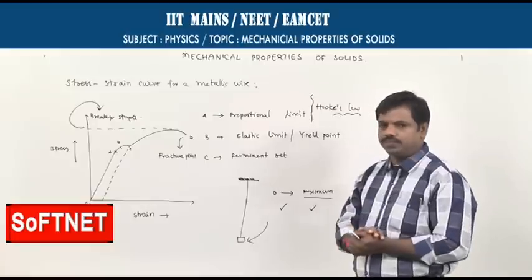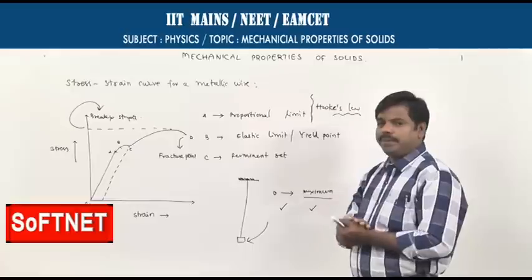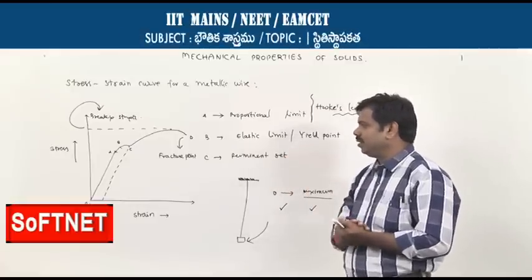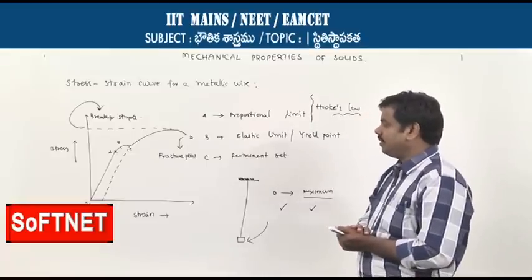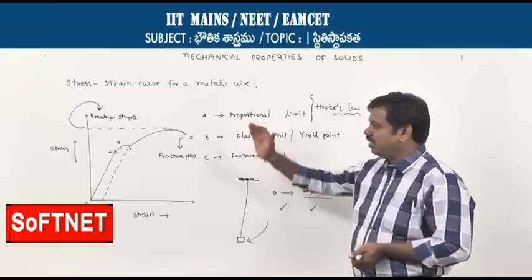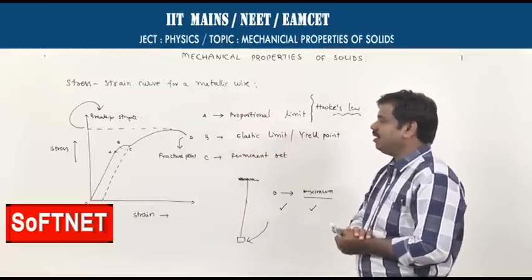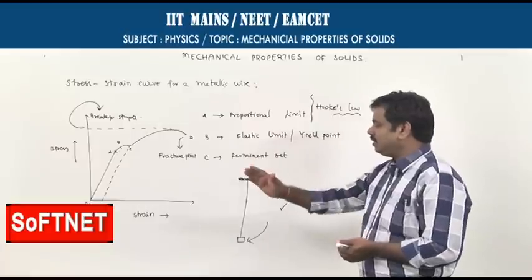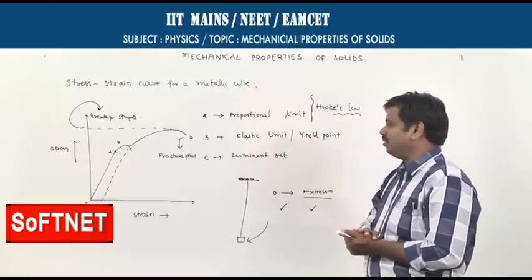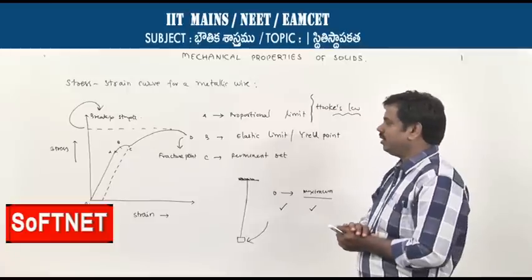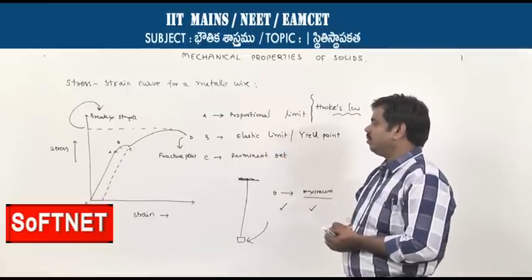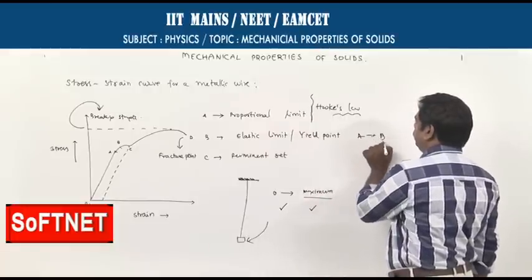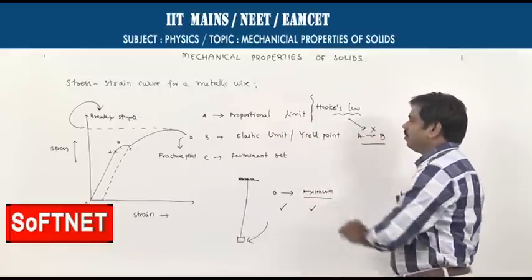Now go to point B. From point A to B, the graph is not a straight line — it is slightly curved. From A to B, stress is not proportional to strain, so Hooke's law is not obeyed. However, at point B, if you release the load, the body still comes back to its original length.